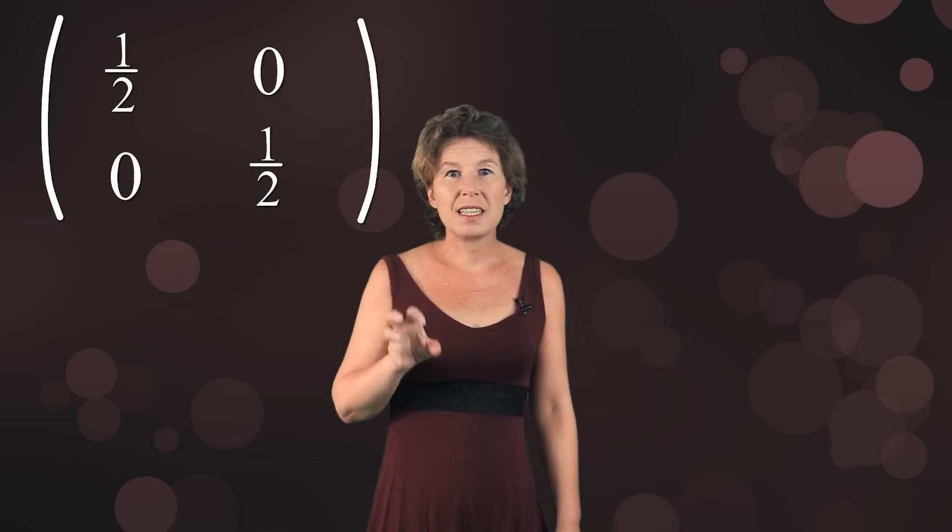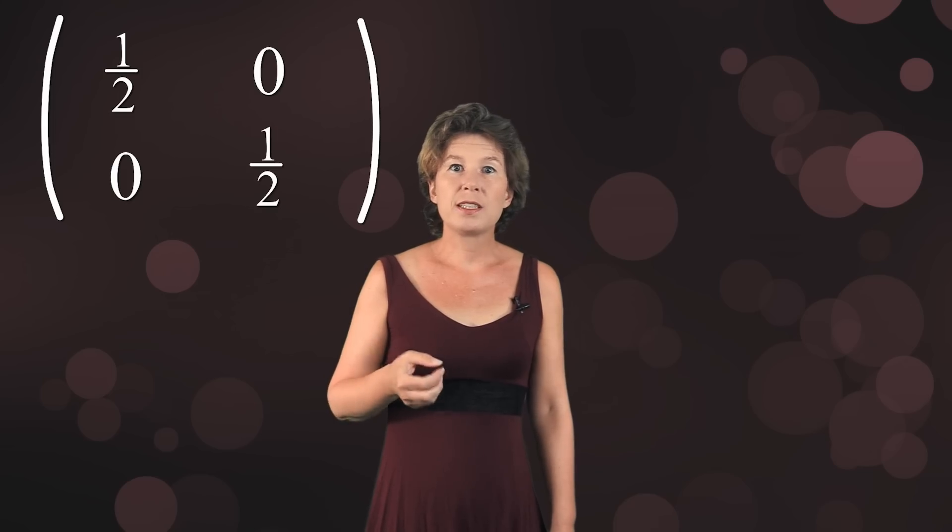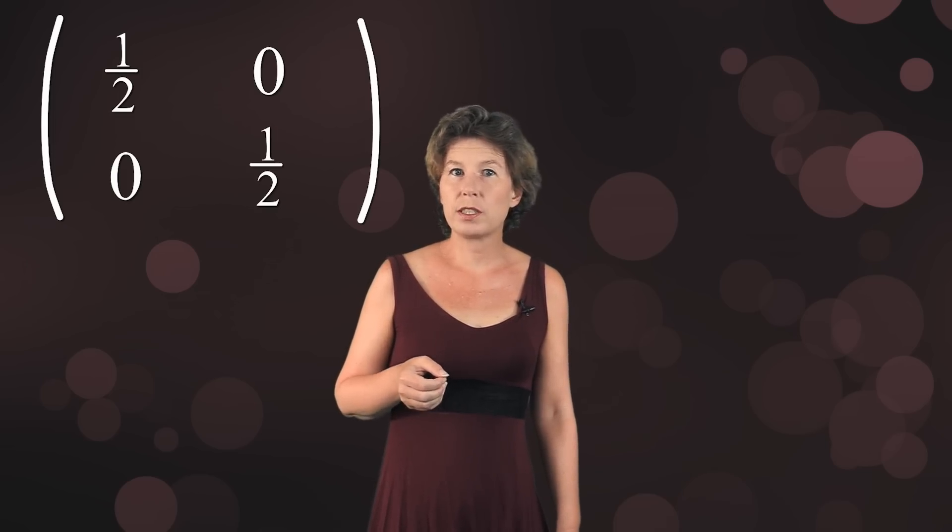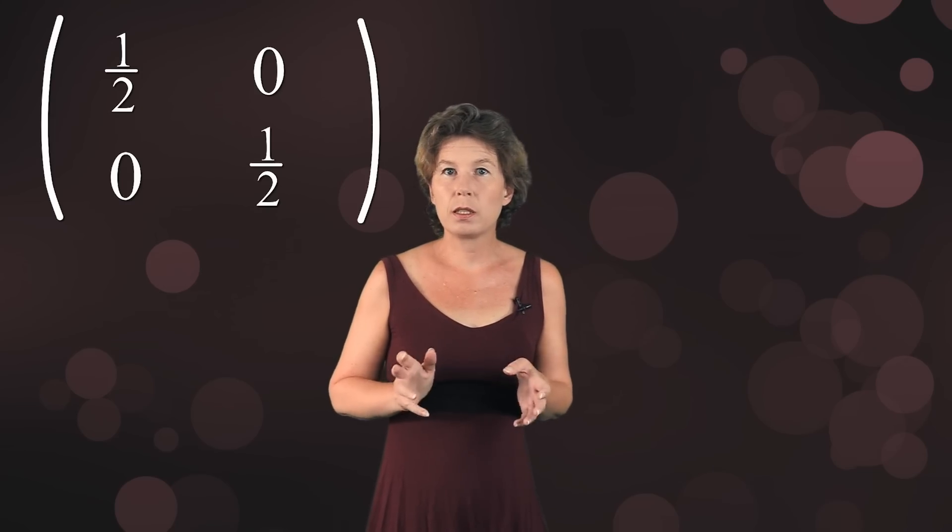Decoherence gives you the right classical probabilities. But it does not tell you what happens with the system itself. To see this, keep in mind that the density matrix in general does not describe a collection of particles or a sequence of measurements. It might well just describe one single particle.